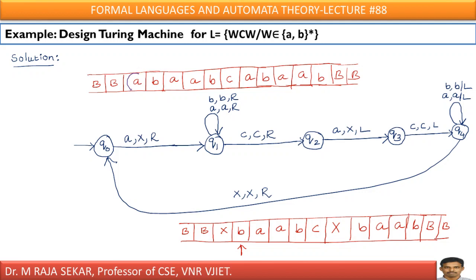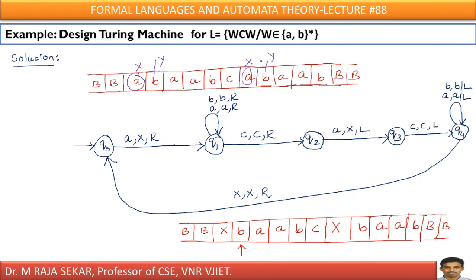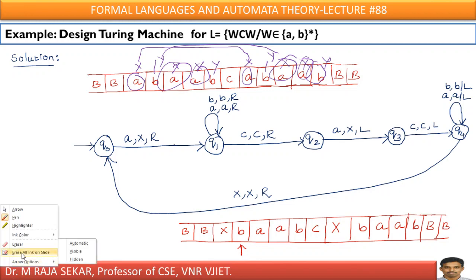The logic is simple. First, I will replace the first A by X and I will search for the corresponding A on the right side of C. In the first iteration, this A is replaced by X. In the second iteration, this B is replaced by Y. In the third iteration, the next A is replaced by X, and so on. By that stage, all A's will be replaced by X and all B's will be replaced by Y. This is the strategy — it is simple and straightforward.